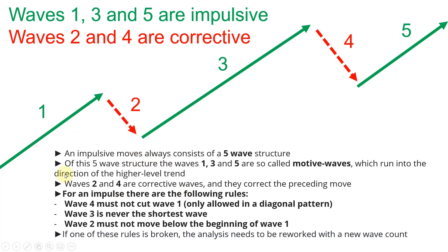Doing a wave count like that is important because it can help you to understand where to set support levels, where to set resistance levels, and where to set stop losses in your trading — and generally to understand in which direction the trend is moving and when to expect a shift in the trend direction. So these are the rules. An impulsive move always consists of a five wave structure that you can see here on the chart.